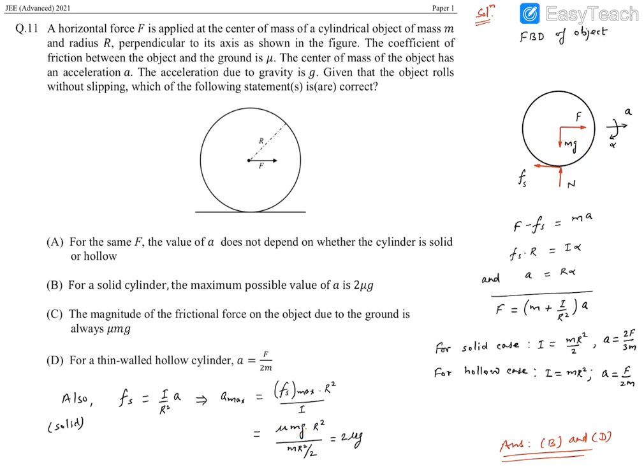If you simplify, m also cancels and it turns out to be 2μg. The maximum possible acceleration for no-slip condition in case of solid cylinder is 2μg. Option B says the same thing, hence B is correct.